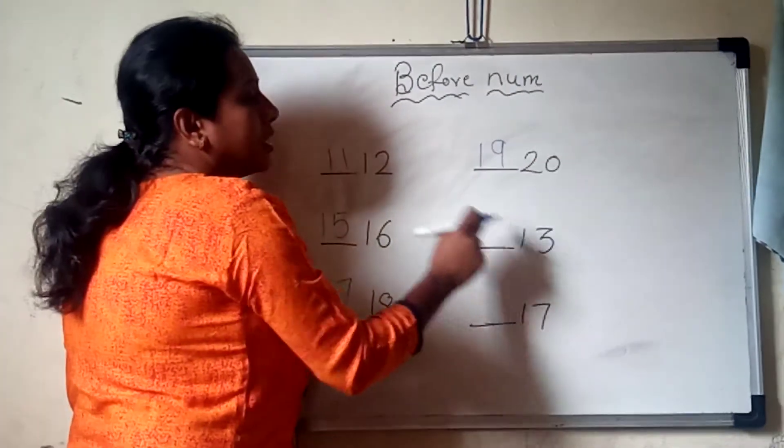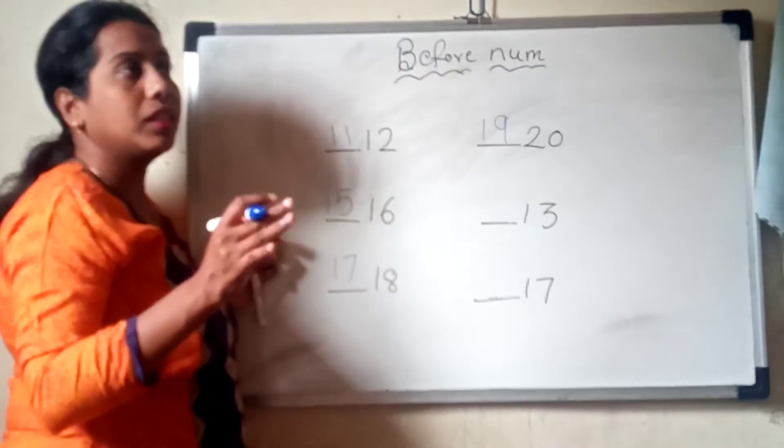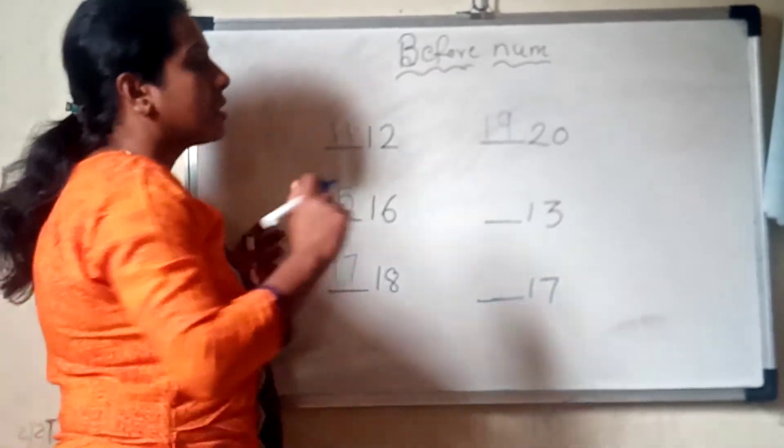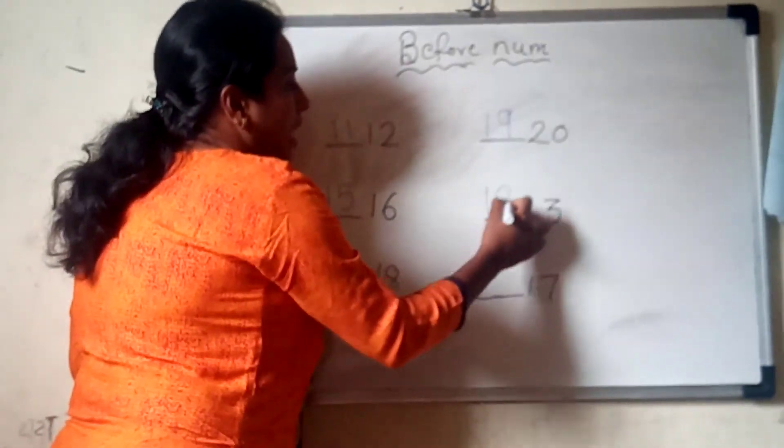Now here 13 — count: 11, 12, 13. So which number will come? 12.